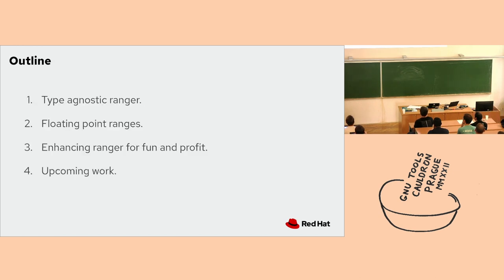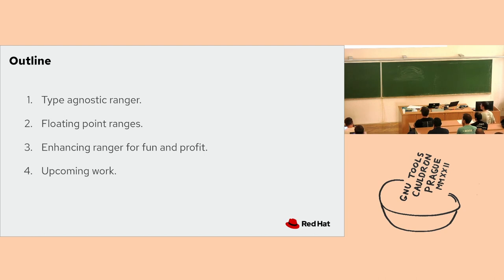The main outline of this talk is to cover the steps we took this year to make the Ranger type-agnostic — so it would work not only on integers and pointers but also on floats — and to have the ability to work on a variety of different types. I'll cover the work going into floating point ranges, which is something we wanted to do for a long time in GCC and weren't able to, how to enhance the Ranger without any intimate knowledge of the Ranger itself, and then upcoming work.